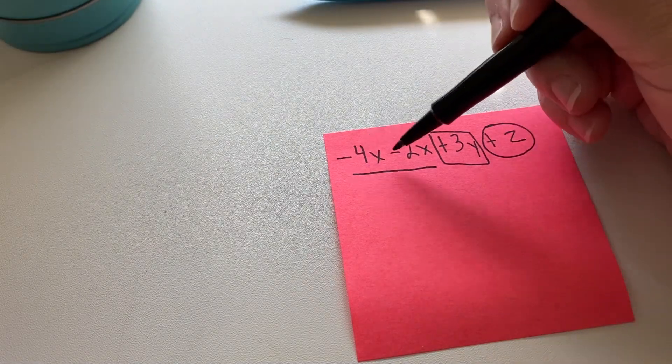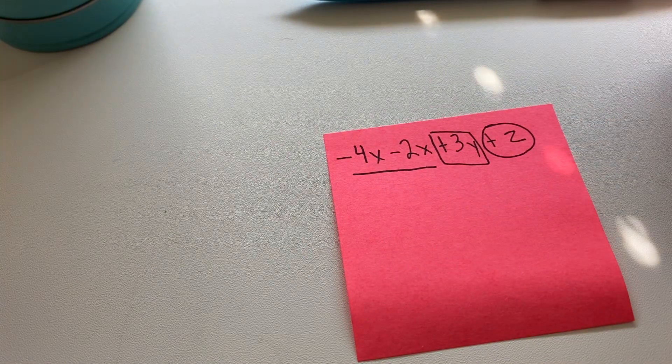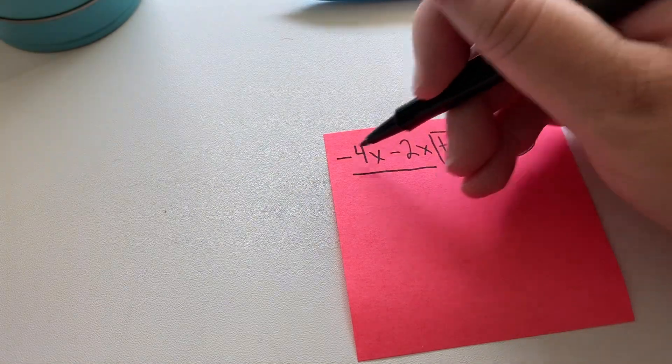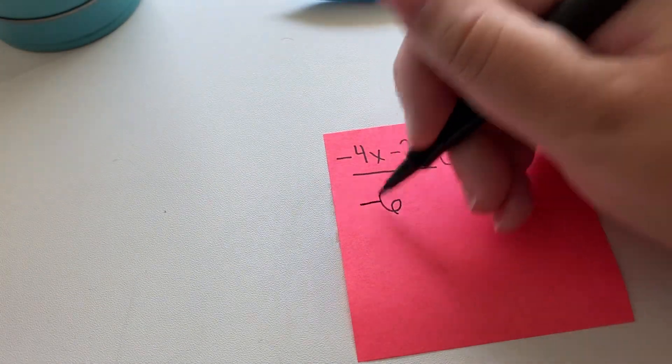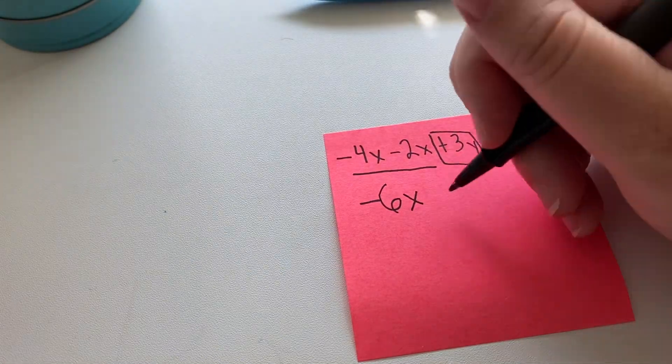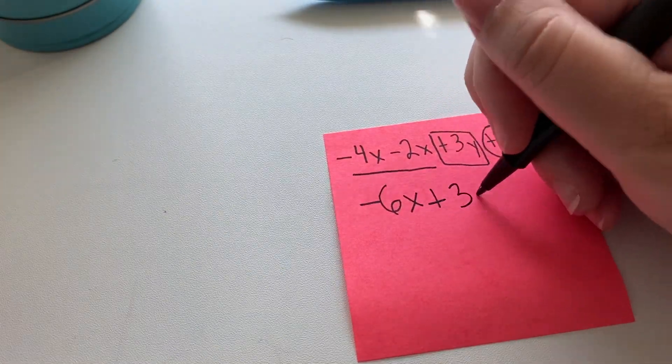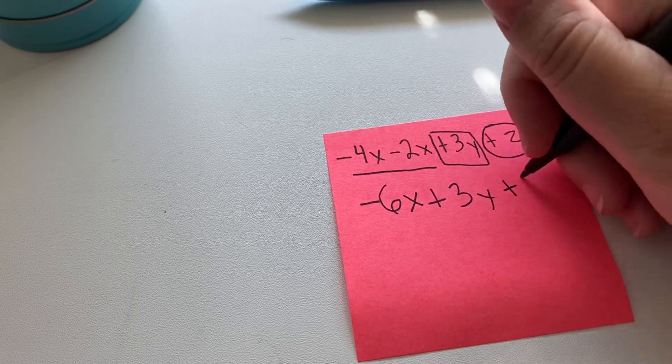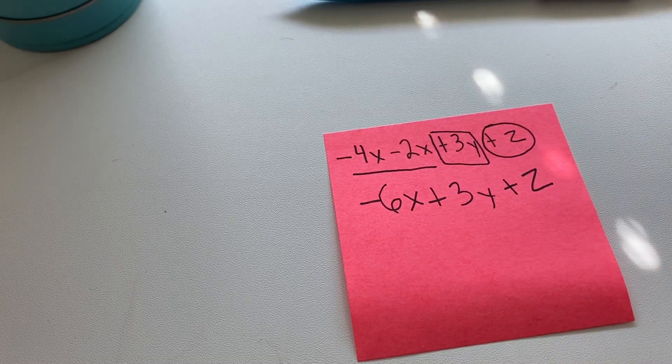These are both negative integers. Same sign, add. So add the 4 and the 2. Keep the sign. So that's negative 6x. And then these have nothing to add to them, so we just keep those. And there's your final answer.